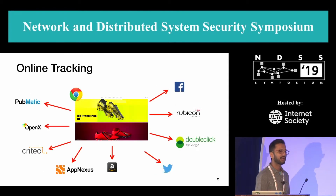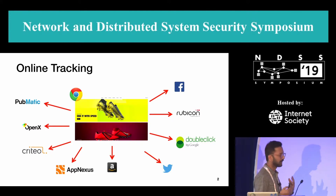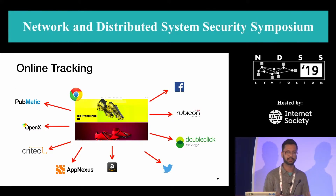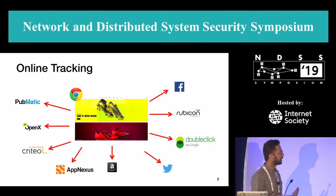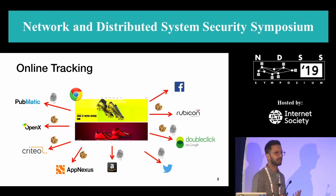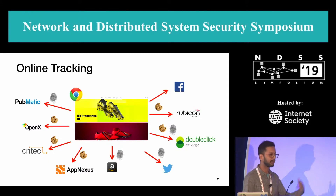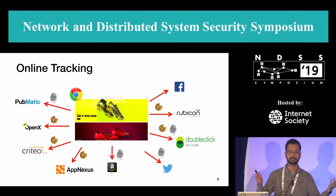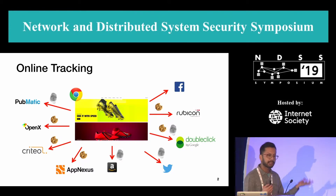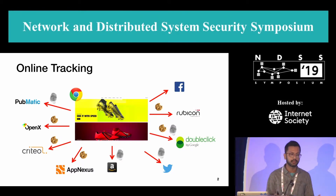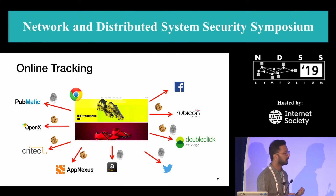By now we have a good understanding of the online tracking ecosystem. We know that users are tracked when they go online and we also have a good idea of how these companies are tracking you — for example by using cookies or fingerprinting, and we have seen DNS-based methods as well. But the idea is that these companies are embedded in the page and they are looking at your information, but we don't exactly know what they are looking at.